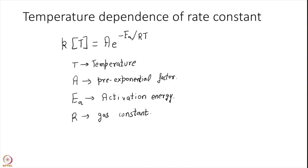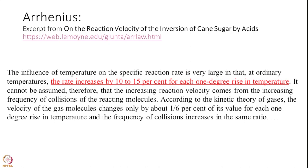Today we will look at the origins of this equation. Let us start by reading excerpts from what Arrhenius wrote in a very famous paper — a translation of that paper can be found in the link above. Arrhenius notes that for most reactions observed at that time, each increase in temperature by 1 Kelvin or 1 degree C changes the reaction rate by 10 to 15 percent per Kelvin.